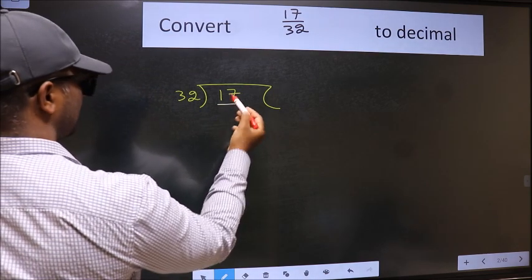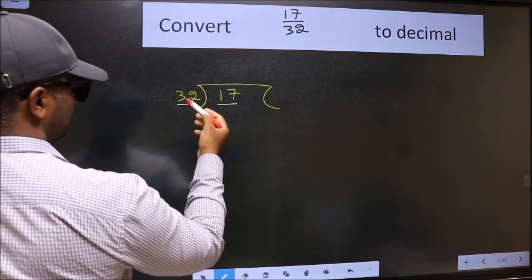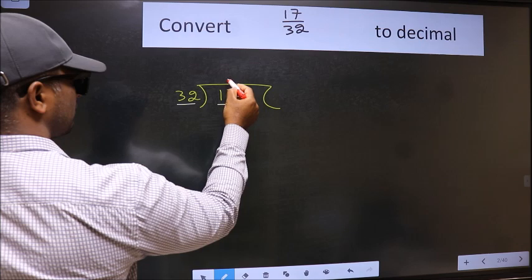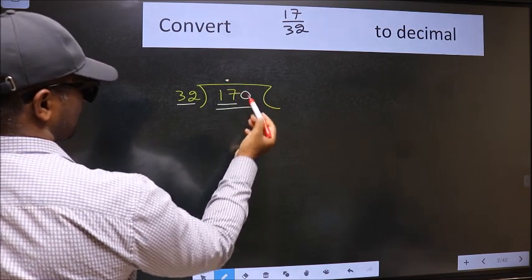Here we have 17 and here 32. 17 is smaller than 32. So what we should do is put a dot and take 0. So 170.